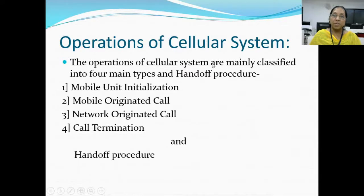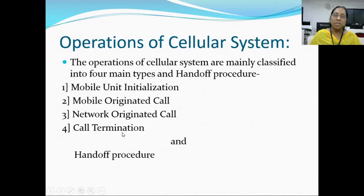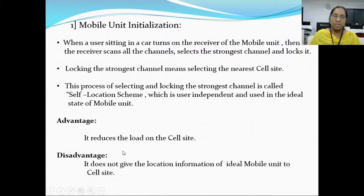The operations of cellular system are mainly classified into four main types and a handoff procedure. The first operation is mobile unit initialization, meaning starting the mobile. Second, mobile originated call, a call done with the help of mobile. Third, network originated call, a call done with the help of landline phone. Fourth, call termination, meaning ending the call, and a handoff procedure. Let us study all these operations in detail one by one.